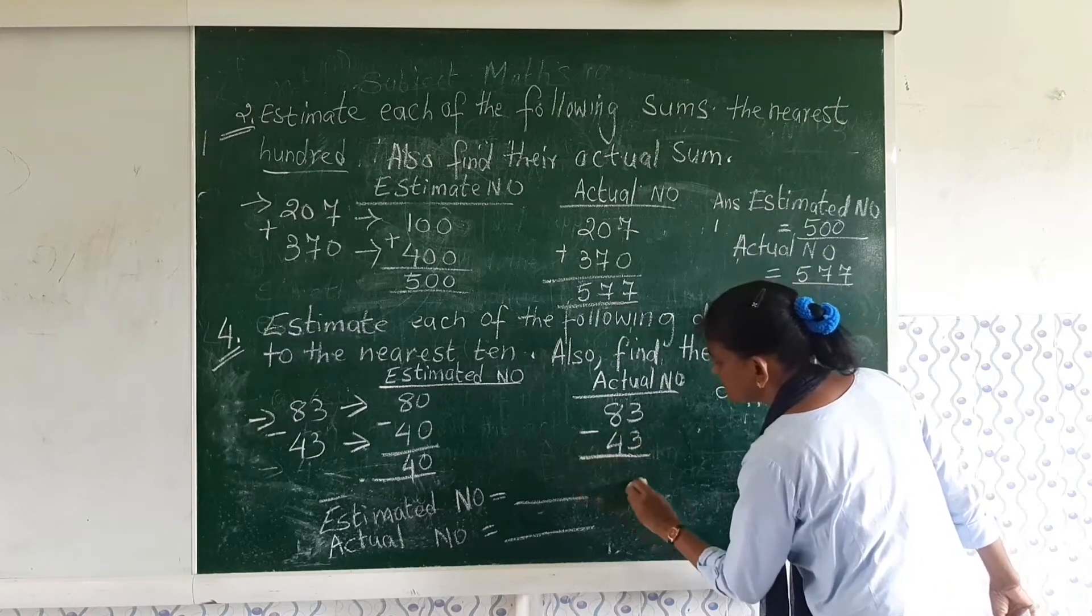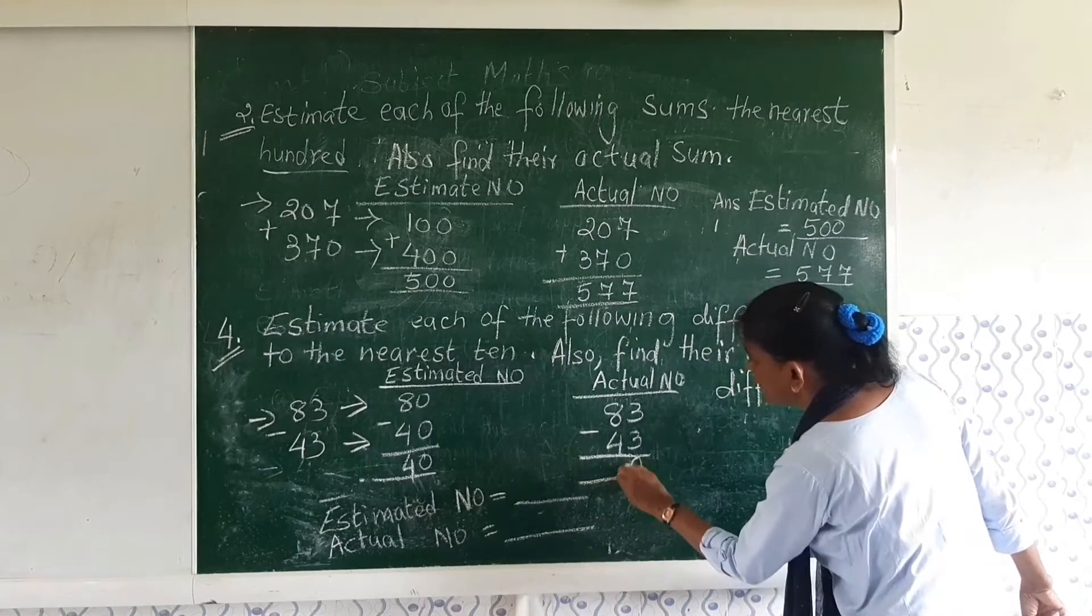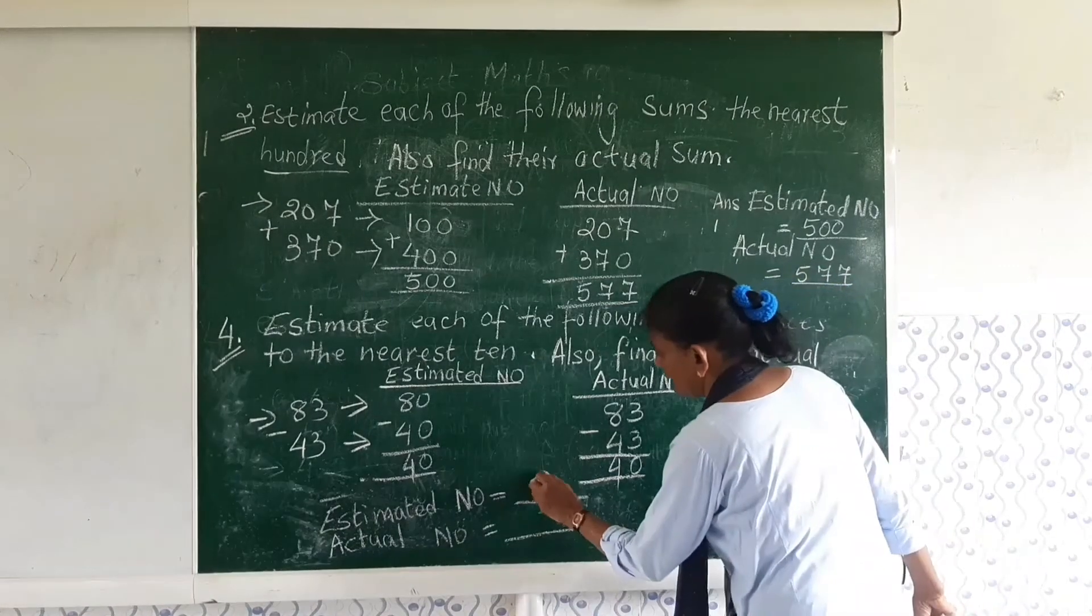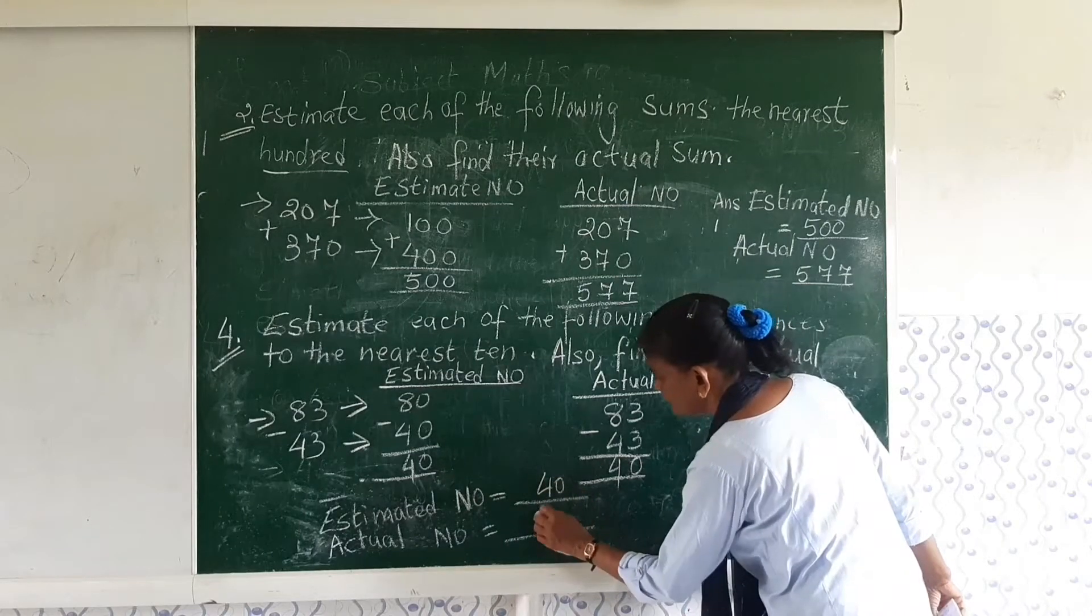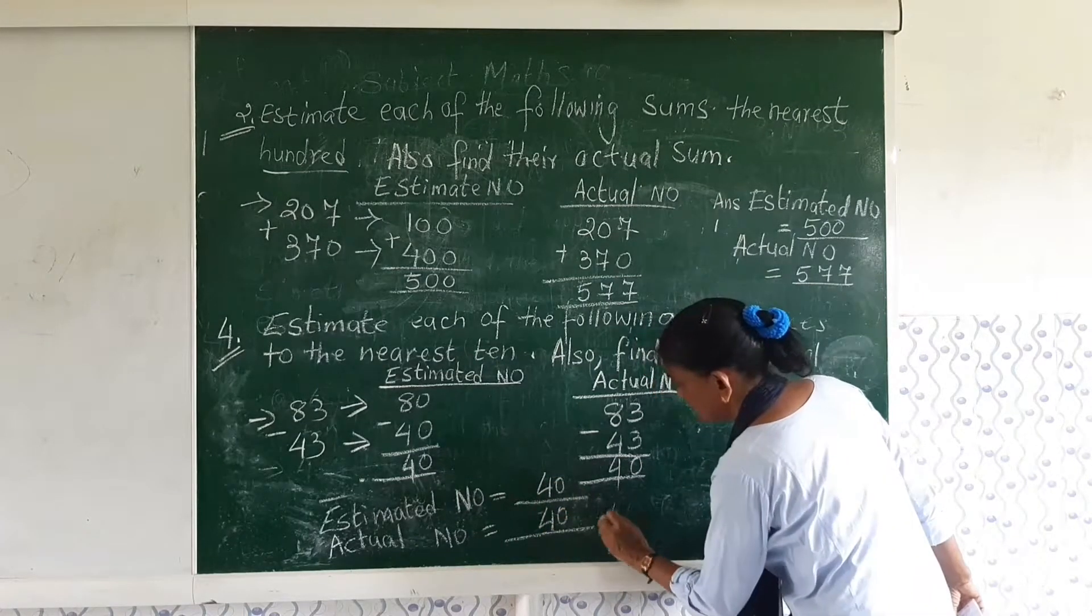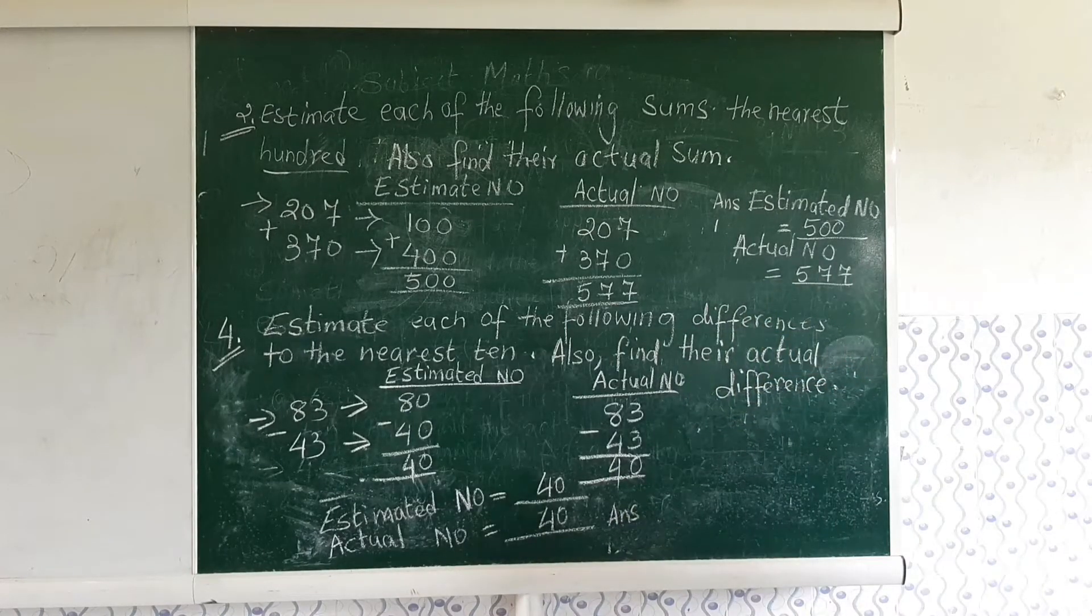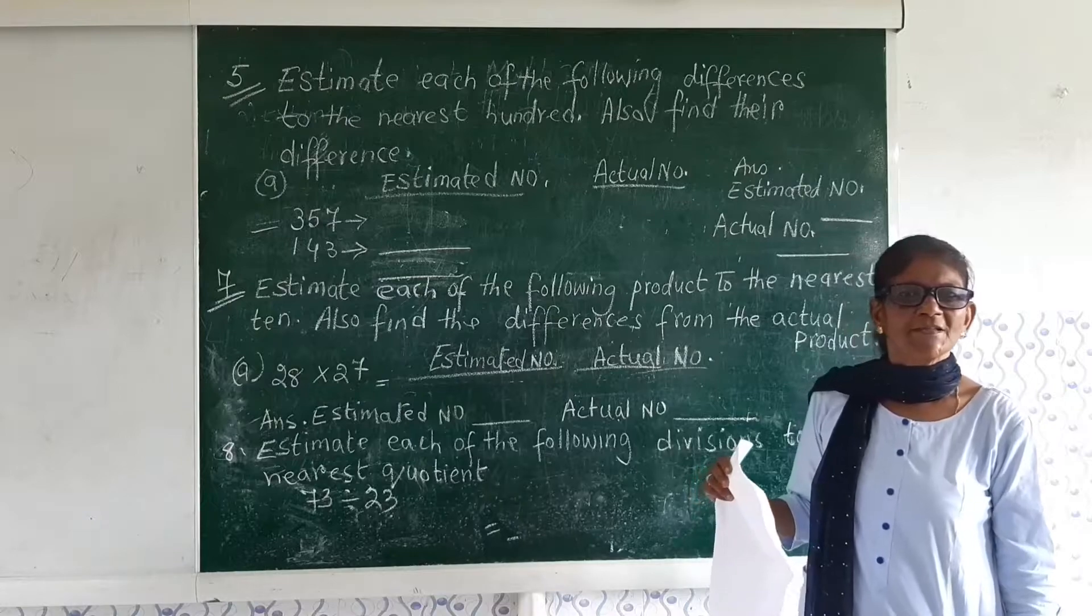We get 40 and the actual number is 83 and 43. So let us subtract and see how much do we get, 40. So the estimated number is 40 and the actual number is also 40. This is your answer. I hope you are clear to it.